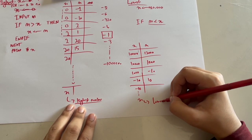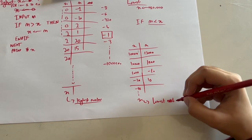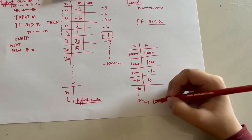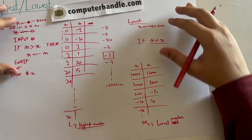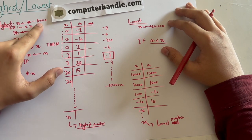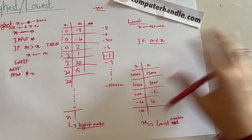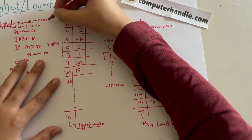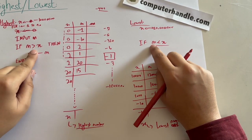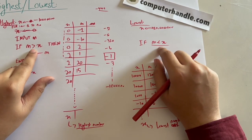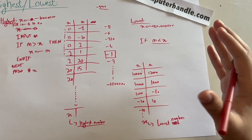The final value of x will be the lowest number. To summarize: for highest, initialize x to a very small (most negative) possible value; for lowest, initialize x to a very large (most positive) possible value. The only other difference is the comparison sign — greater-than for highest, less-than for lowest. The value 10,000 is just an example; it could be a million or billion — any number the user is very unlikely to enter.